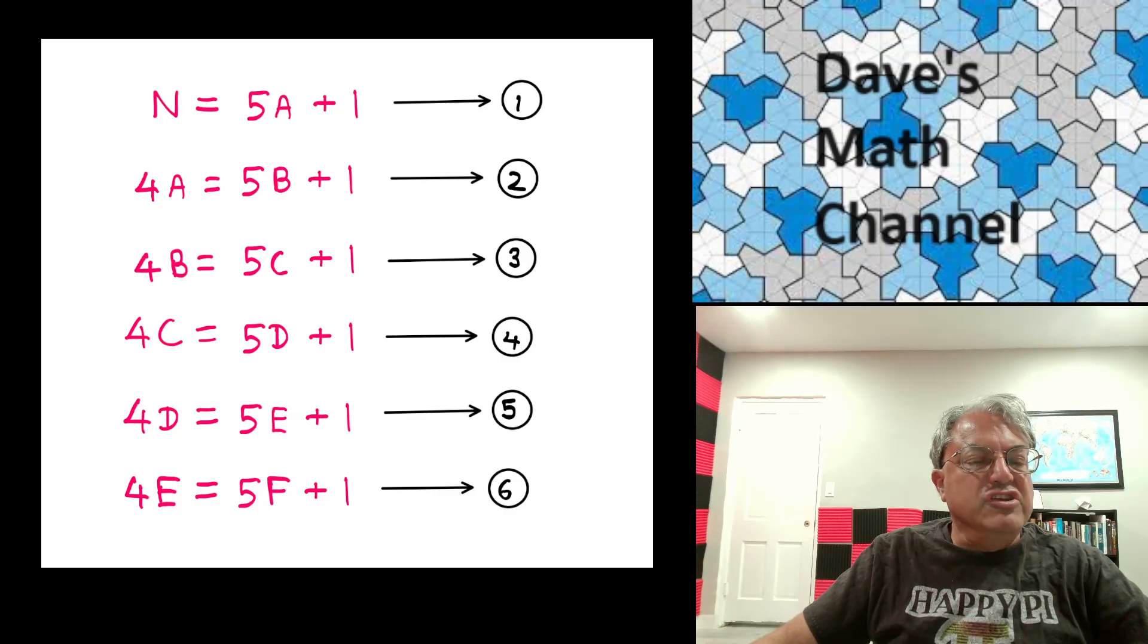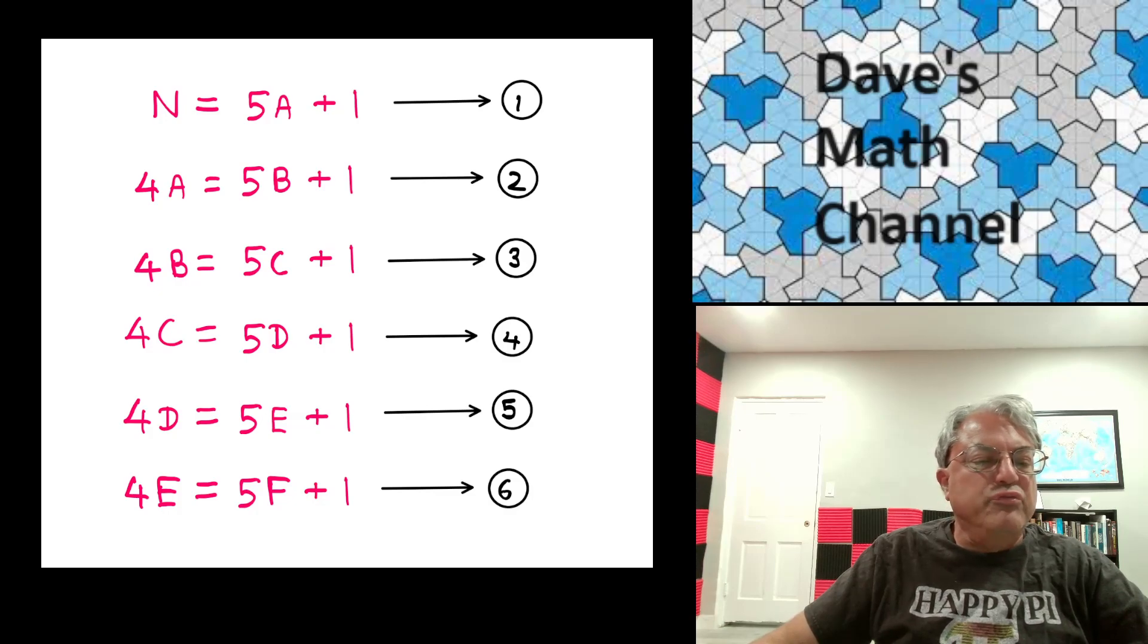Finally, don't forget that in the next morning, each sailor takes F coconuts. So we have to do this one more time, the sixth time. So 4E equals 5F plus 1. Those are the equations we get. And all these numbers have to be integers.